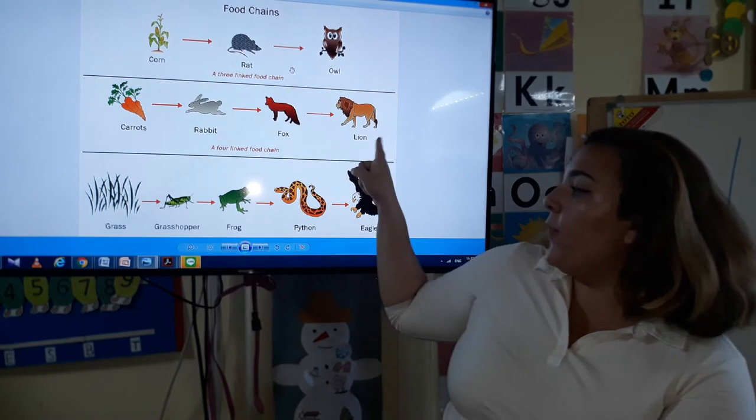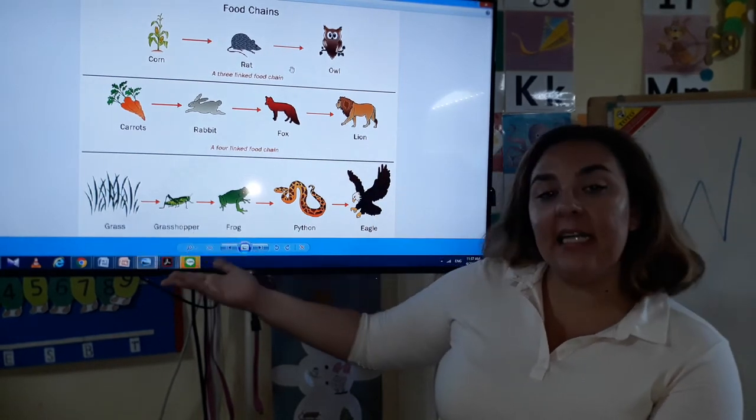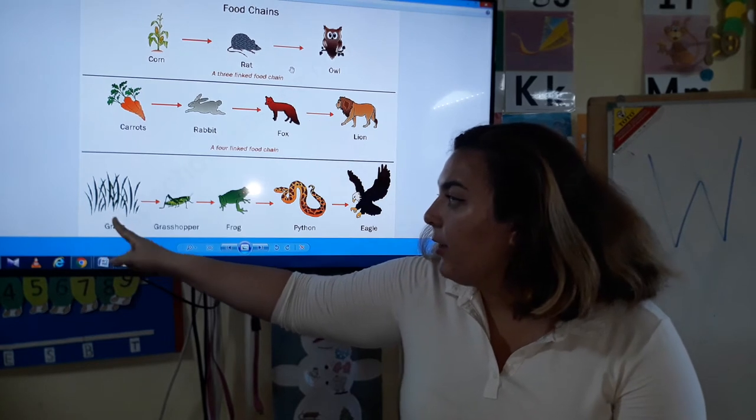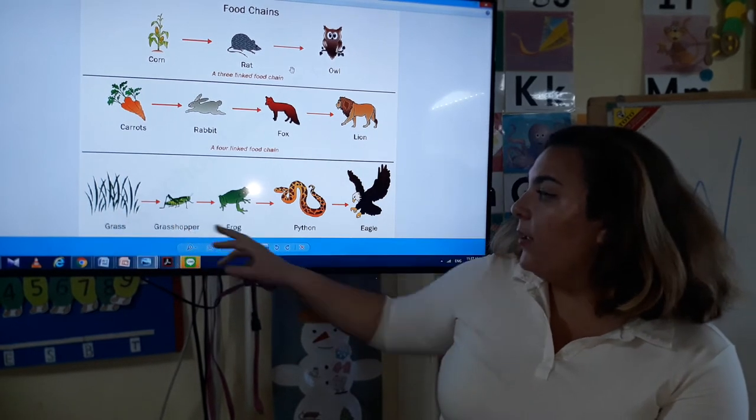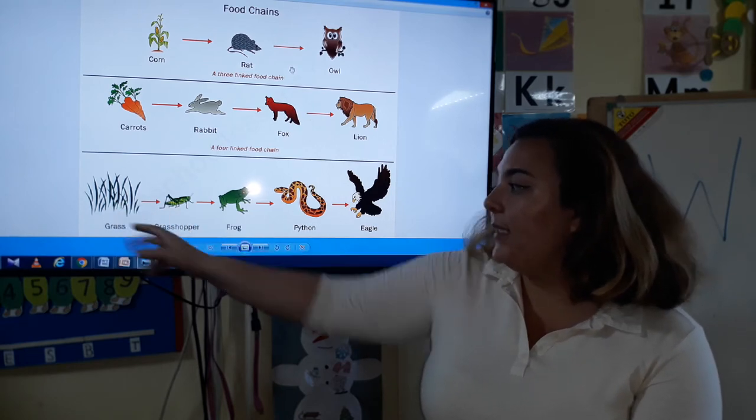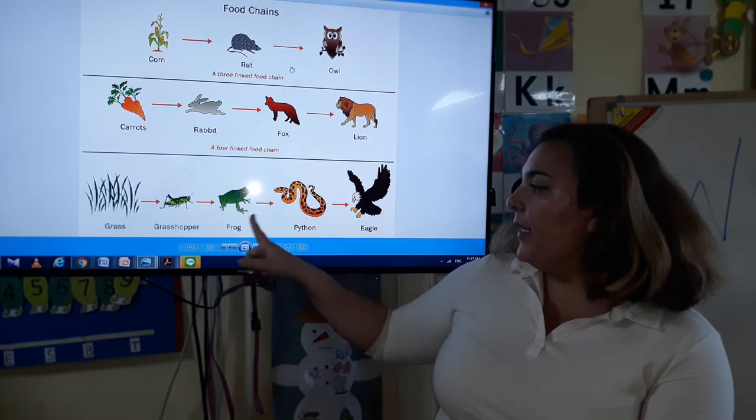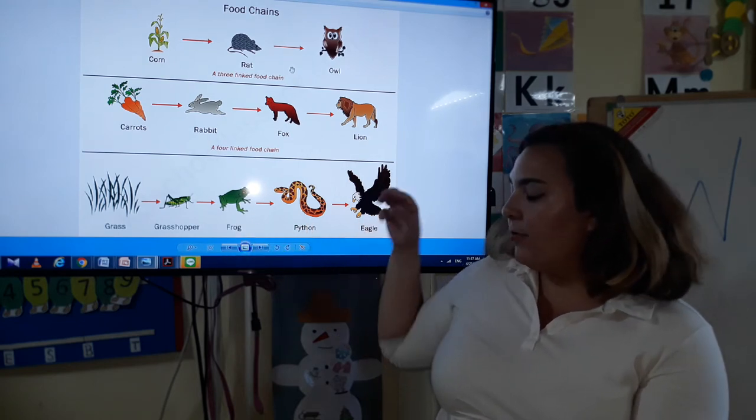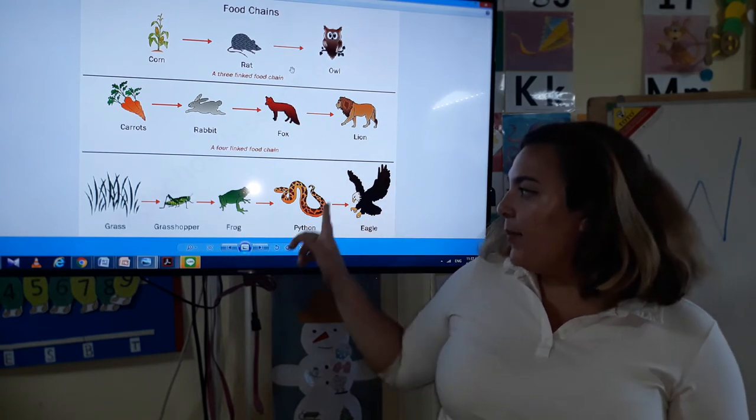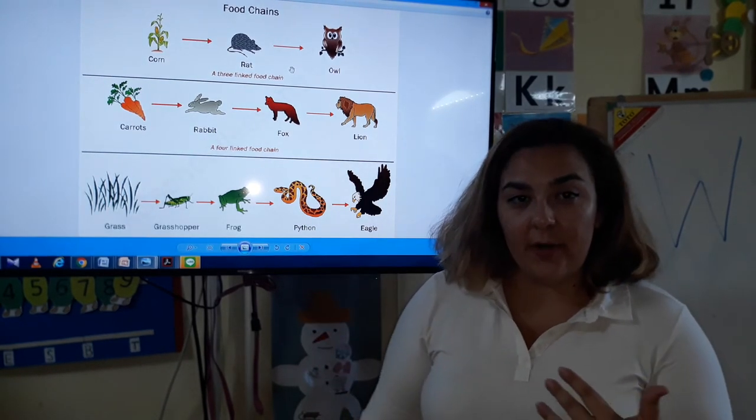At the bottom we have this last food chain: grass, grasshopper, frog, python, and eagle. The grasshopper eats grass, the frog eats the grasshopper, the python eats the frog, and then the eagle will fly in and eat the python. So there you have it - that's a food chain for you.